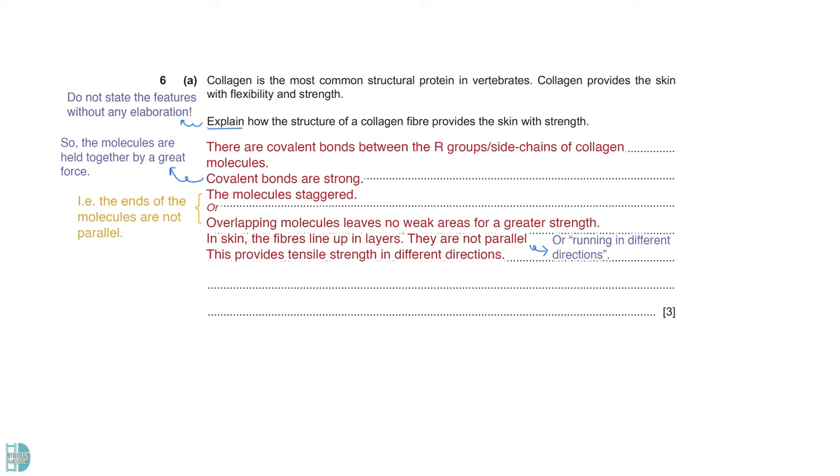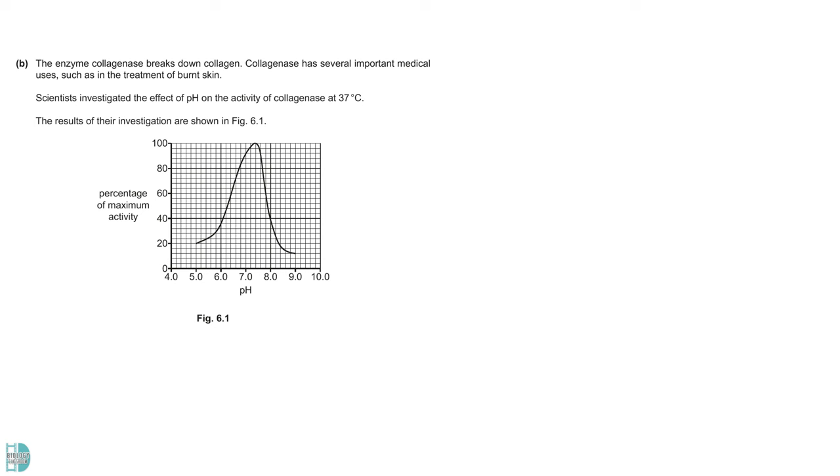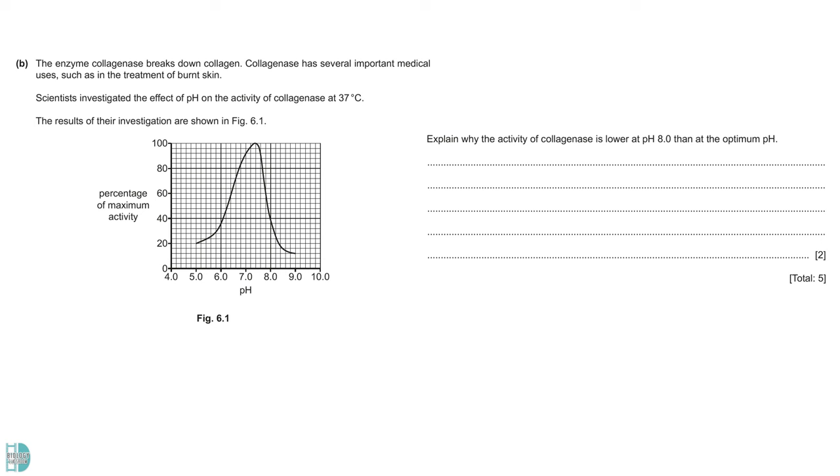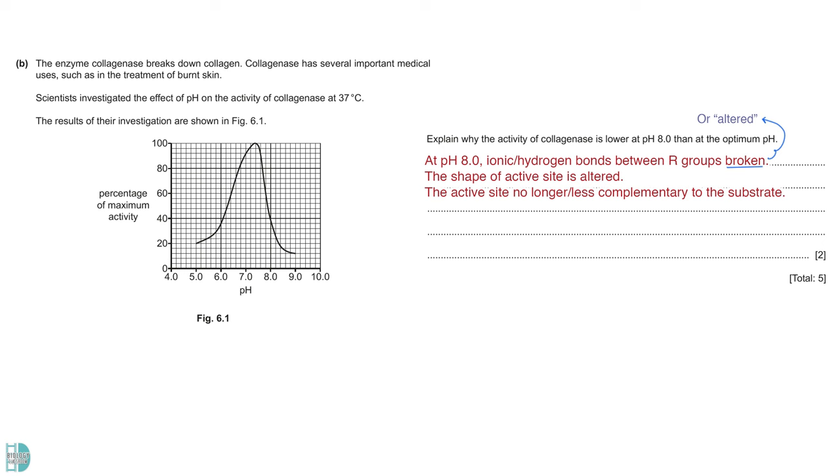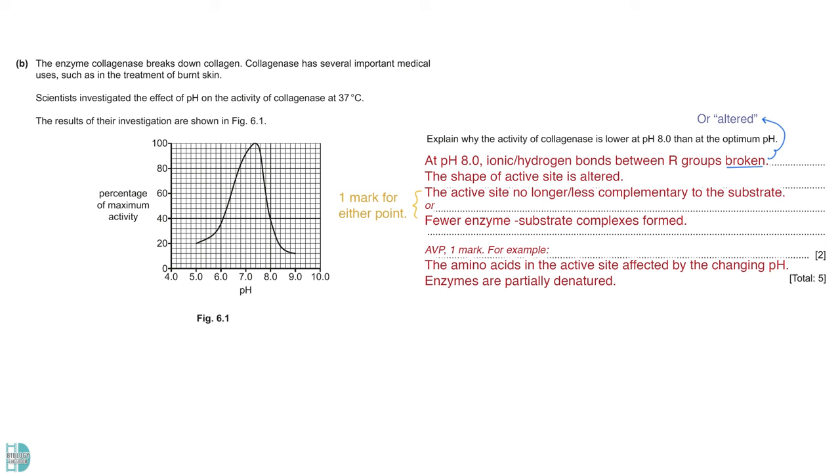B shows the effect of pH on the activity of collagenase at 37 degrees Celsius. You are asked to explain why the activity of collagenase is lower at pH 8.0 than at the optimum pH. At pH 8, the ionic and hydrogen bonds between R groups are broken or altered. The shape of the active site is altered because of that. The active site is no longer complementary to the substrate, which is collagen. So, fewer enzyme-substrate complexes form. There is a mark for AVP. For example, you can mention that the amino acids in the active site, known as the catalytic amino acids, are affected by the changing pH. Enzymes are said to be partially denatured.